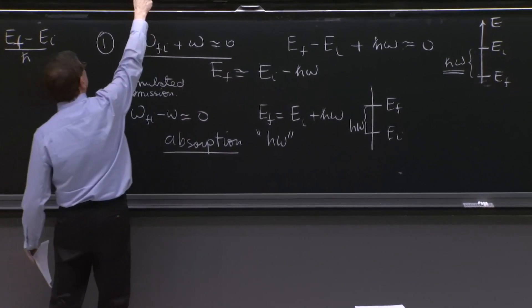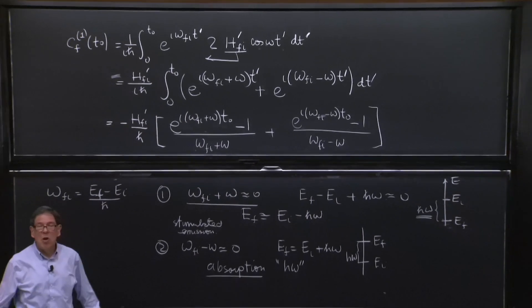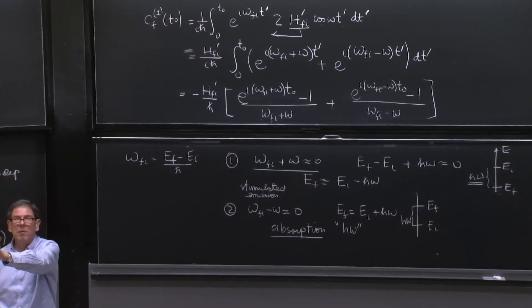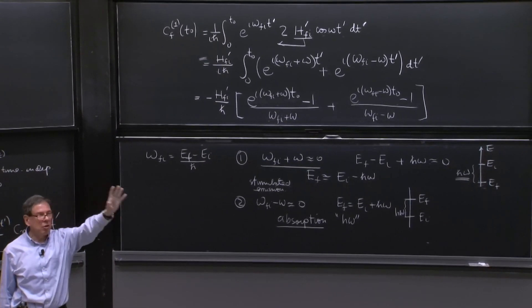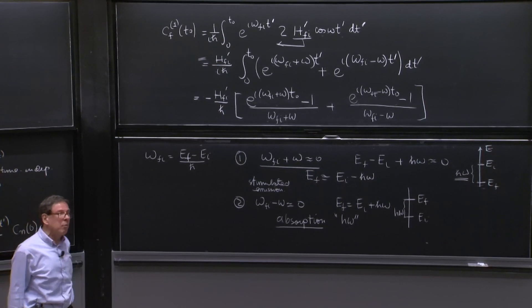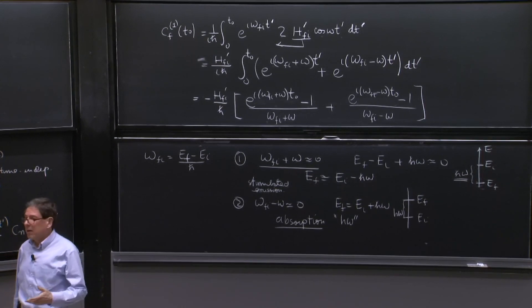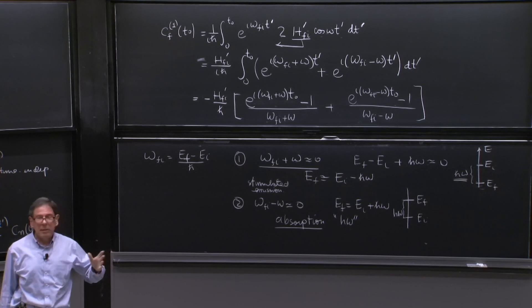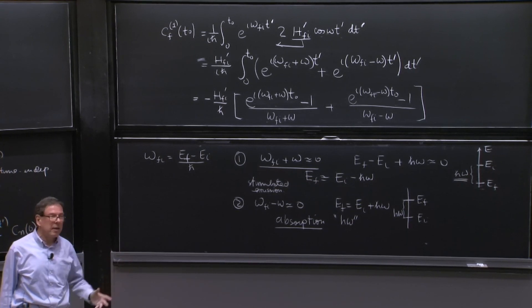This term is becoming 0. And this term is negligible. So you can completely ignore one term when you're doing absorption. You can ignore the other term when you're doing a stimulated emission. You would say, oh, but it's not exact. How about if I keep it?